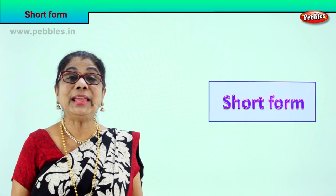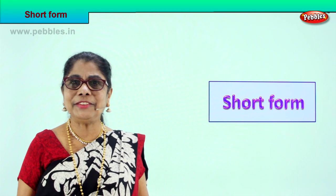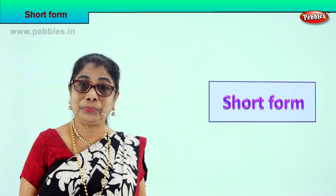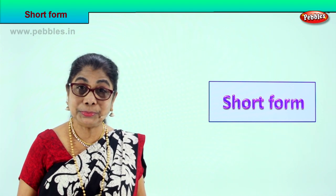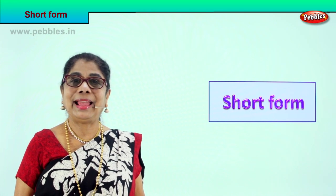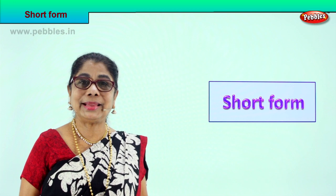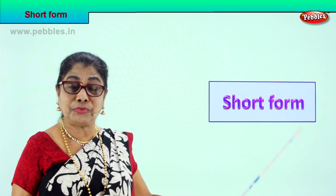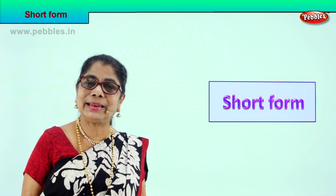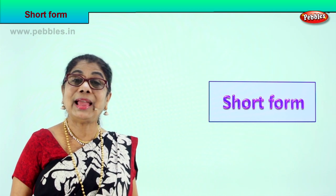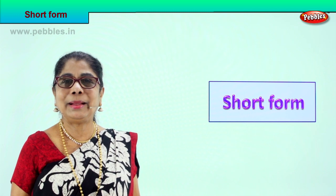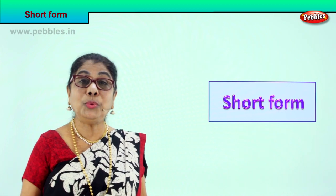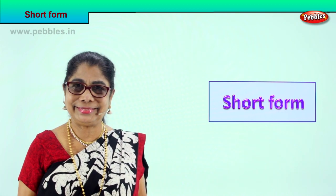Hi children, today let us learn something different. We are going to learn short form. What is short form? If I tell you three tens plus two ones is equal to — short for that is thirty-two. So we are going to learn short form. Look at the pattern: how many tens, how many ones, and what is the combined tens and ones together. It's very interesting, I hope you will enjoy it.